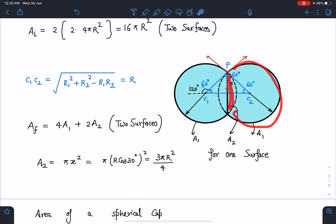So total finally the surface area will become 4A₁ + 2A₂. There are two surfaces. Now A₂ is very easy to calculate. A₂ is this radius is R, so it will be like a disc kind of or a flat circle.